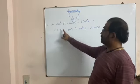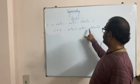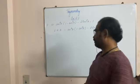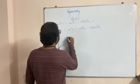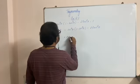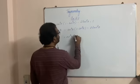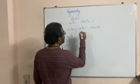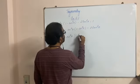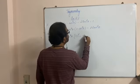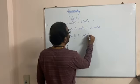I wrote the expression as it is: sec⁴θ into (1 minus sin⁴θ minus 2tan²θ). We try to simplify. This is sec⁴θ. For 1 minus sin⁴θ, I am writing it this way: 1² minus sin²θ, the whole square.